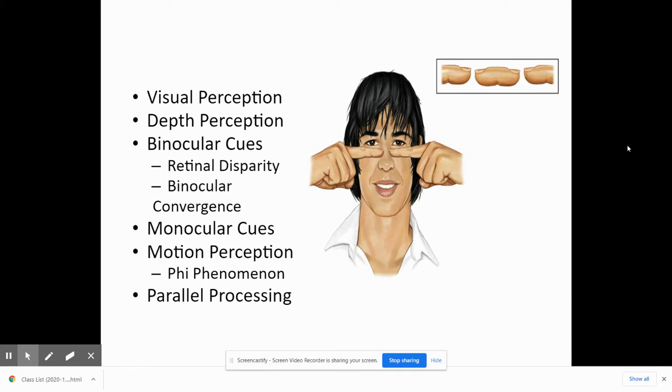Now, this can be done in one of two ways, depending on how close an object is. If an object is close, we're going to use what's called binocular cues, meaning that we have to use both eyes together in order to perceive depth at close distance.